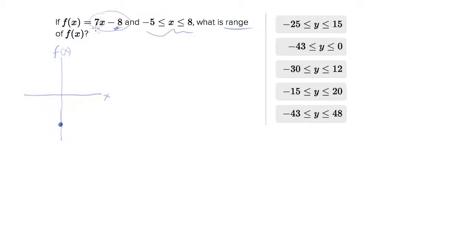I know that the slope is a steep positive 7, so I'm gonna draw a steep line through here that intersects the vertical axis there at negative 8. So we have a linear function, there's a line.